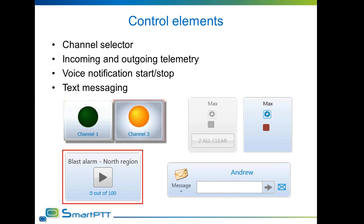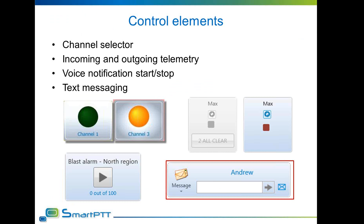The voice notification control element provides quick access to voice notifications configured on a radio server. The dispatcher does not need an additional menu to start a notification — just a big, straightforward play button. Upon clicking, a pre-recorded message will start playing on channels specified in the radio server settings. The play button then changes to a stop button, and clicking it will stop the sound notification. The text messaging prompt element becomes active when any other element capable of receiving TMS is selected. The TMS prompt shows the name of the subscriber or group to which the message will be sent. The dispatcher can enter the message text directly or select from a list of predefined messages in a drop-down menu.